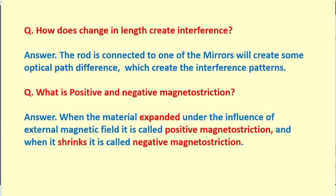When the material expands under the influence of external magnetic field, it is called positive magnetostriction. When the material shrinks, it is called negative magnetostriction.